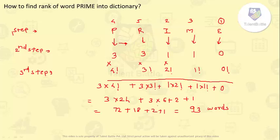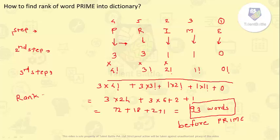After doing this method, you will realize there are 93 words which come before PRIME. So PRIME will be the next word after those 93 words, meaning the rank of PRIME is 93 + 1 = 94. To recap: Step 1 — give alphabetical order to all letters. Step 2 — calculate the number of letters on the right with a lesser value. Step 3 — multiply those numbers by factorials starting from 0! on the right side, sum them up, and add 1. The rank of PRIME is 94.